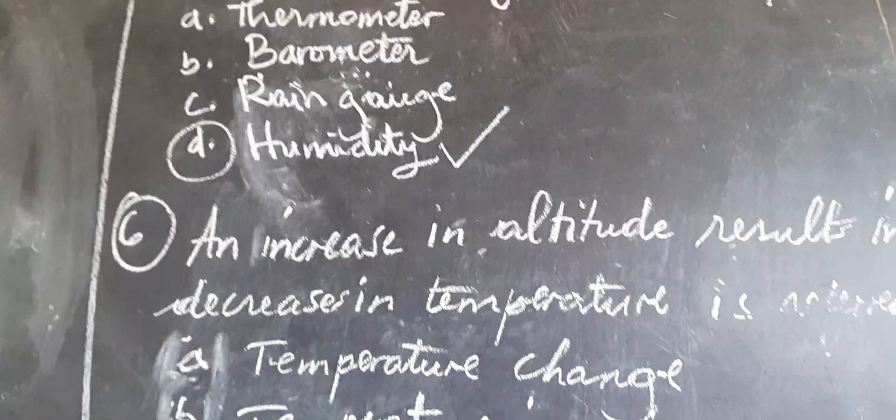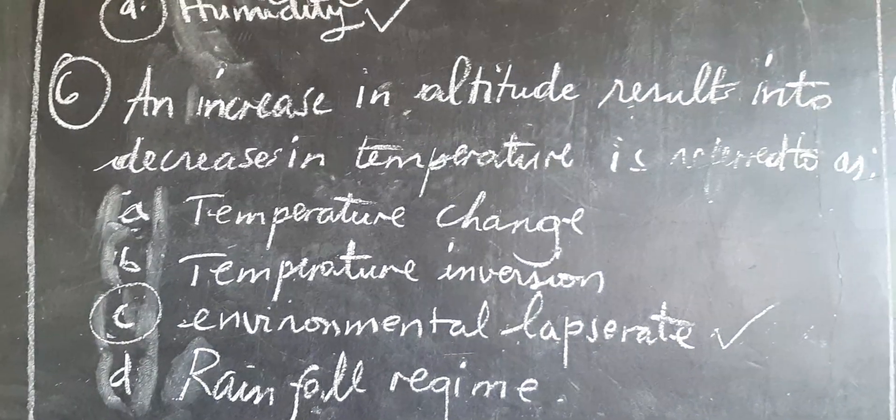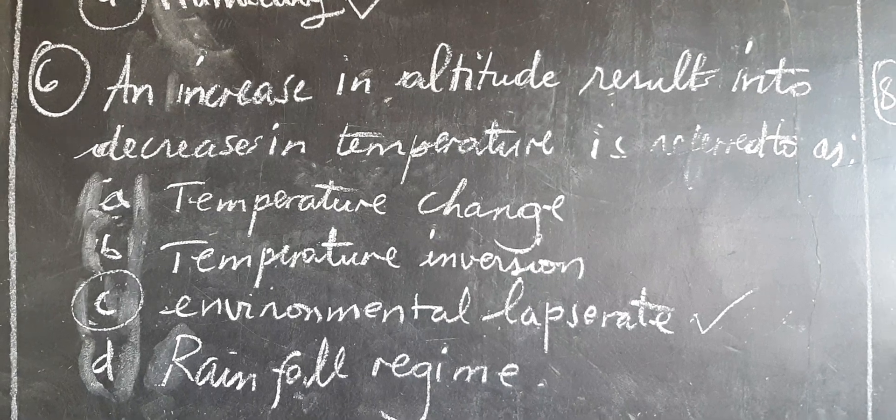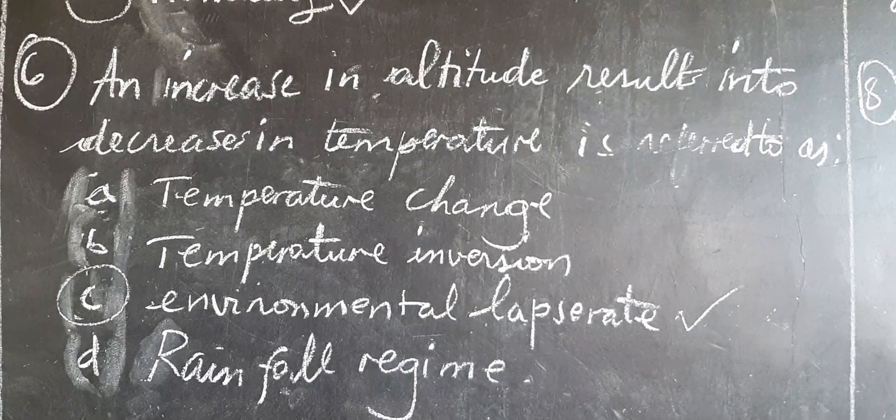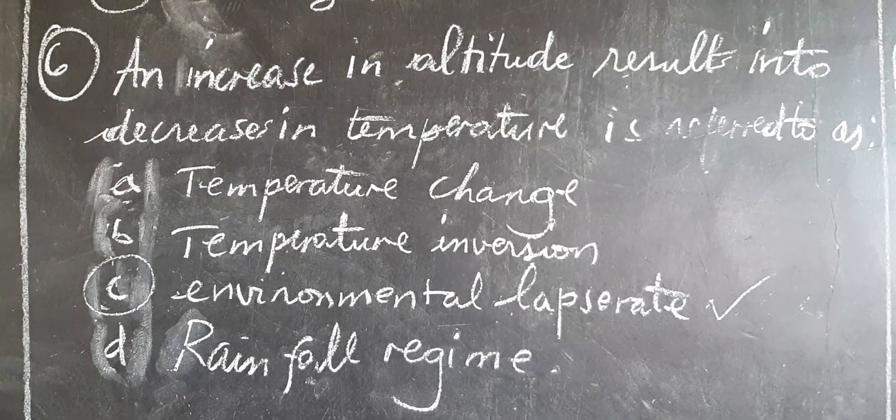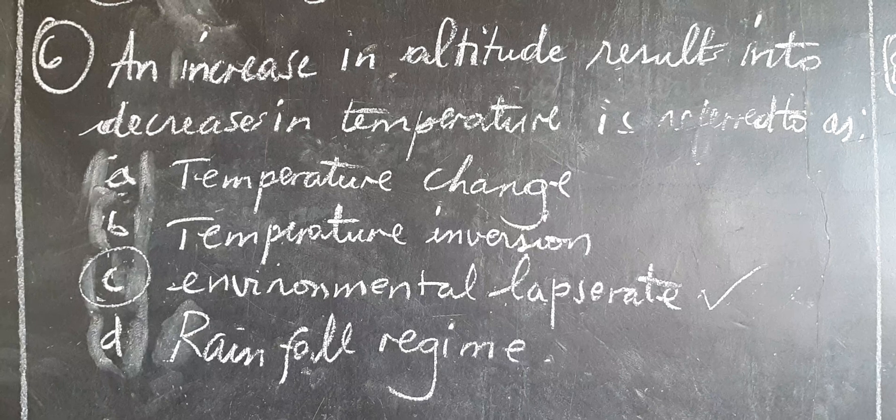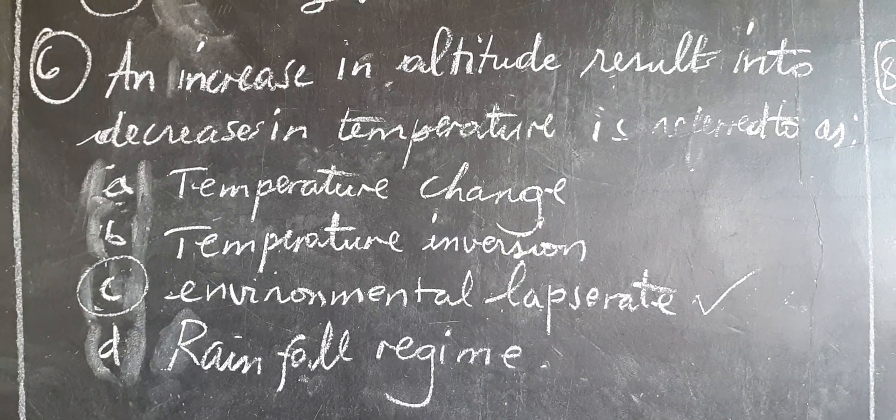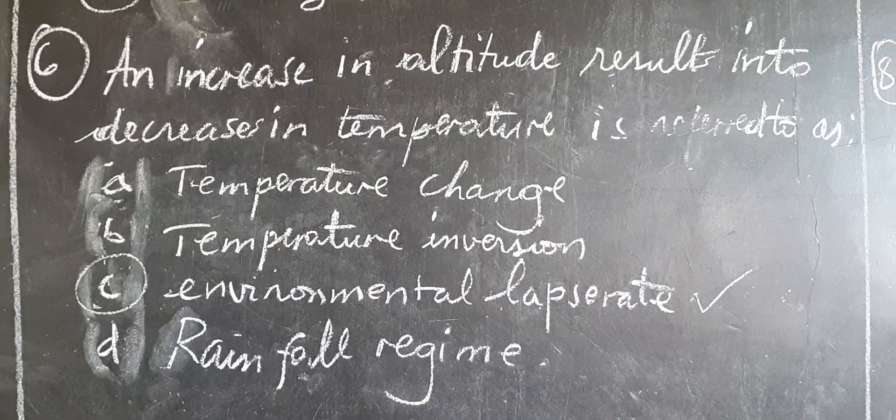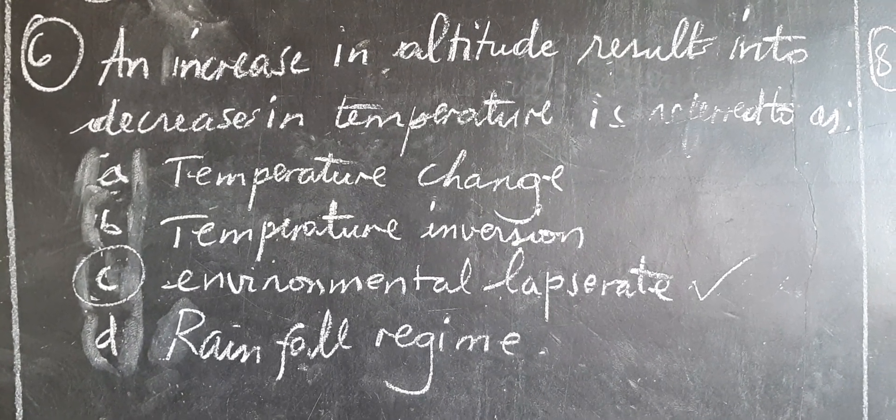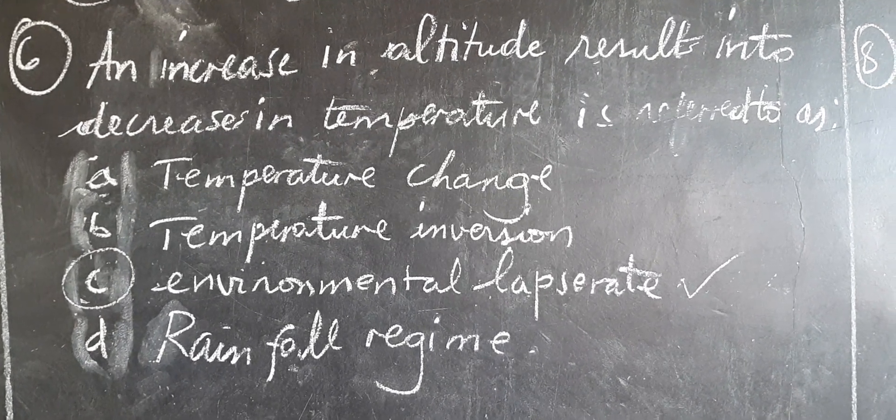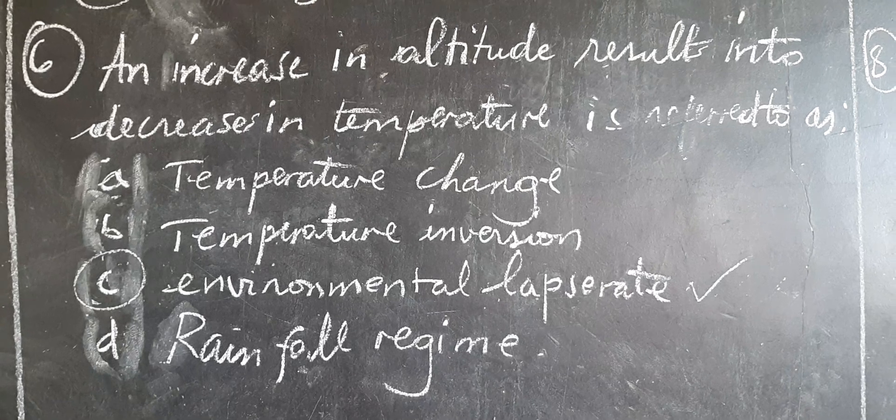Let's go to question number two. Question number two is asking, an increase in altitude results into decrease in temperature and is referred to as A. Temperature change, B. Temperature invasion, C. Environmental lapse rate, D. Rainfall regime. So the correct answer is environmental lapse rate, because environmental lapse rate refers to the situation where an increase in altitude leads to decrease in temperature. So therefore the correct answer is C.